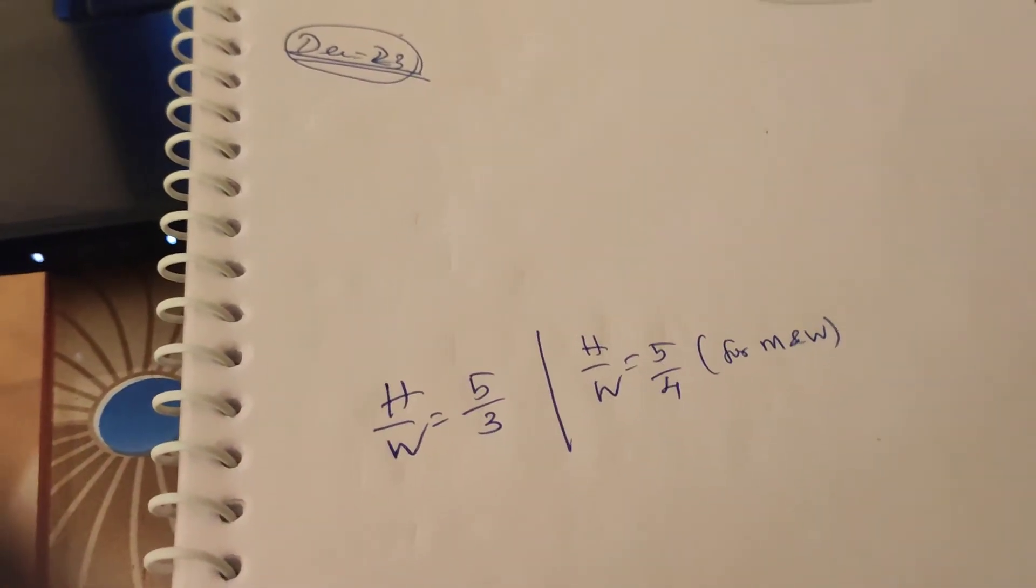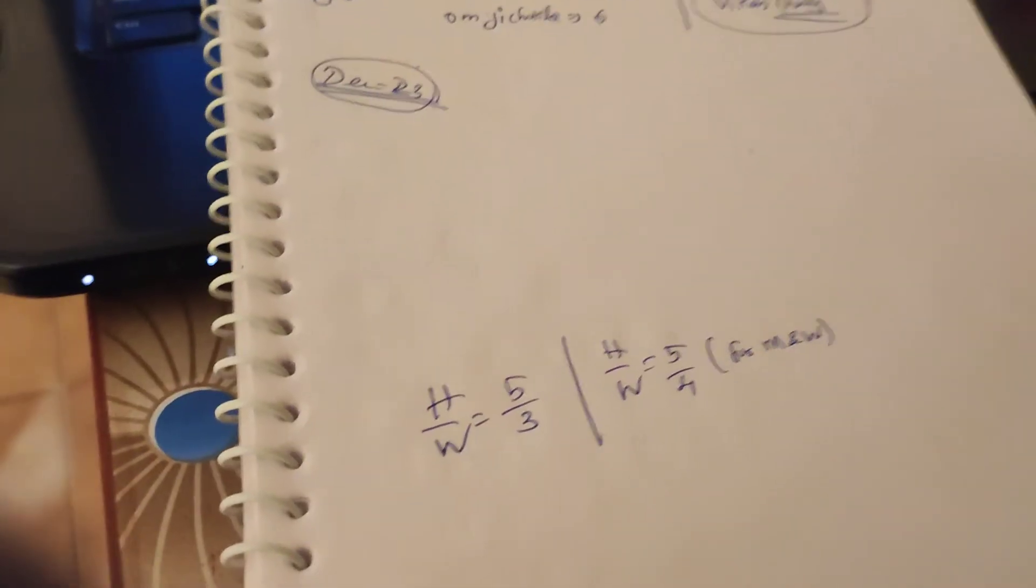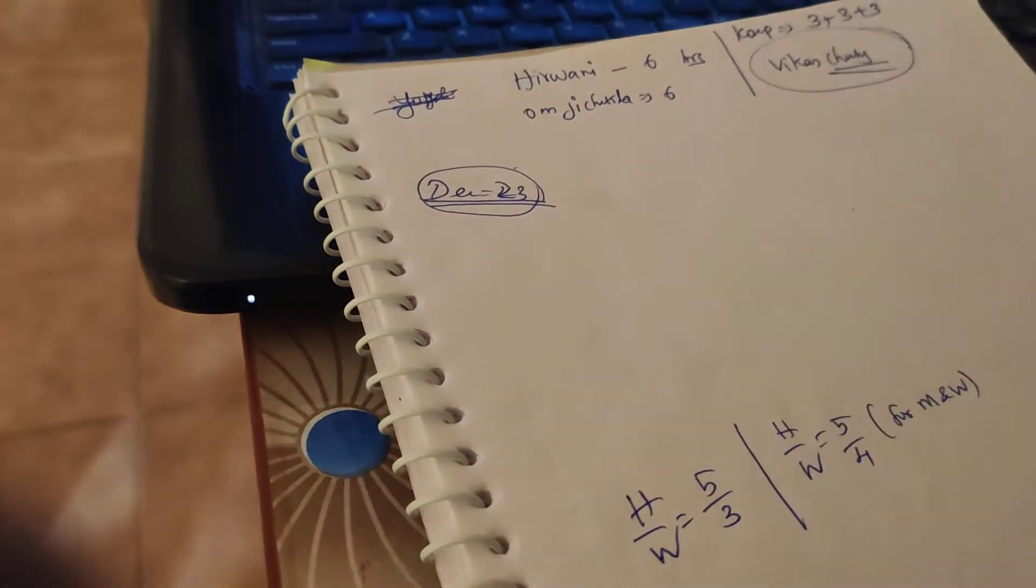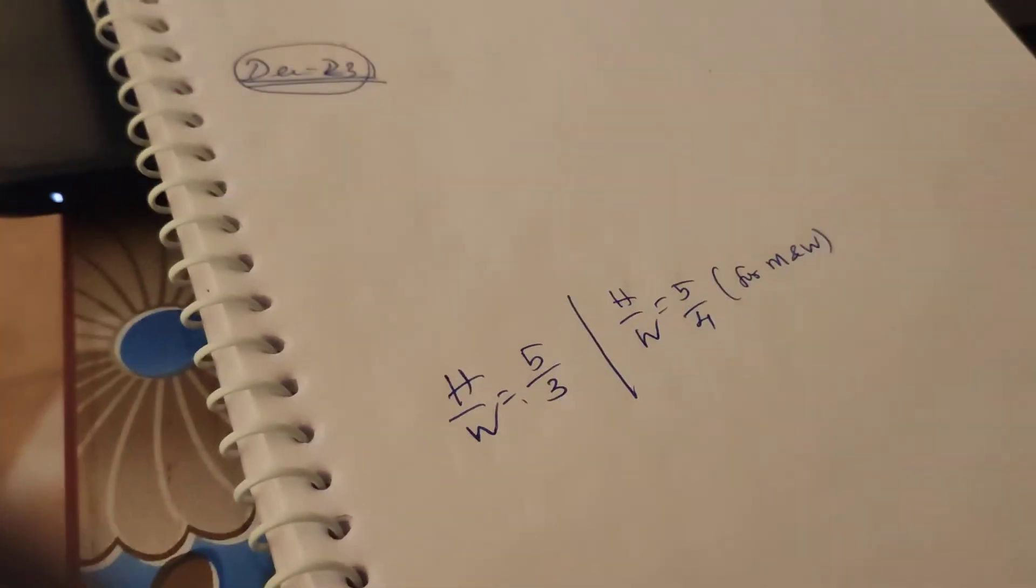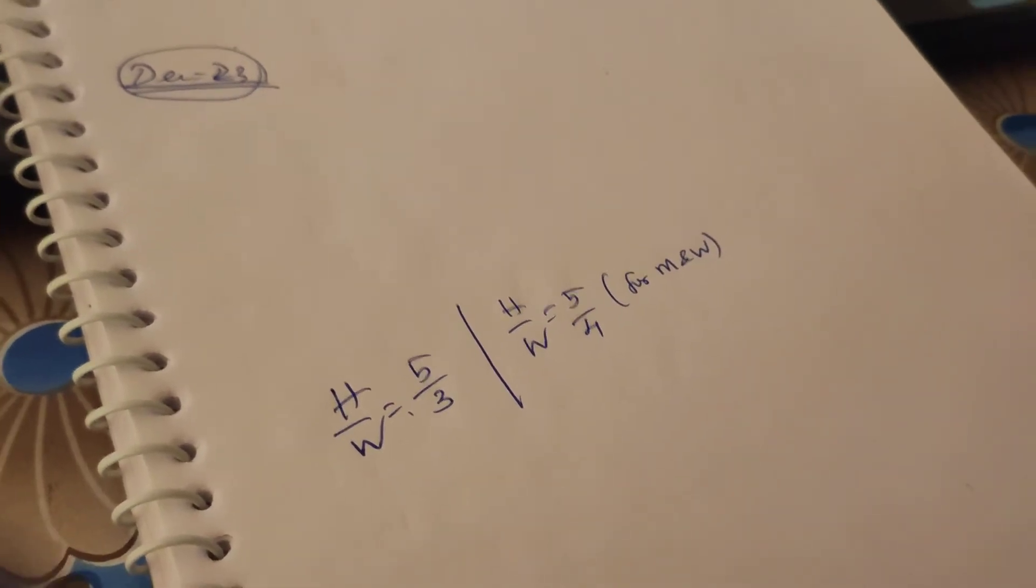So dear students, I have given the assignment that you have to write the alphabets and numericals for assignment 1, but still some of you have not finished and keep on calling me. Let me tell, I told you we cannot fix the width of the letter, but we have that formula H by W is 5 by 3. We have to use that formula to find out the width of the letters, the alphabets.